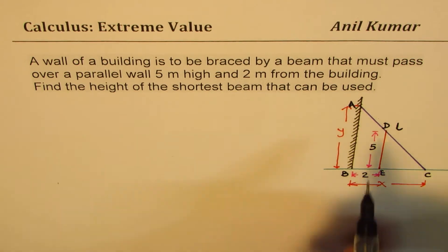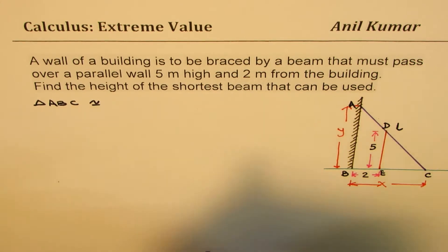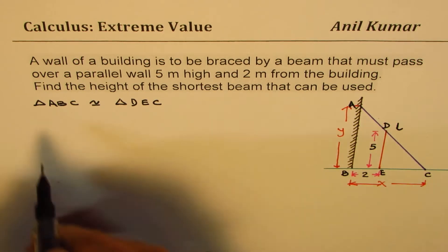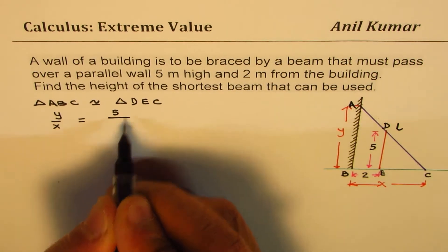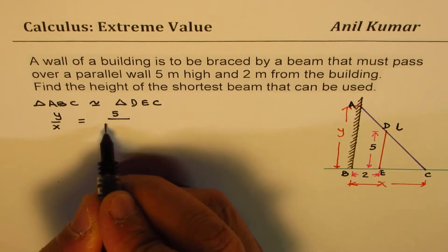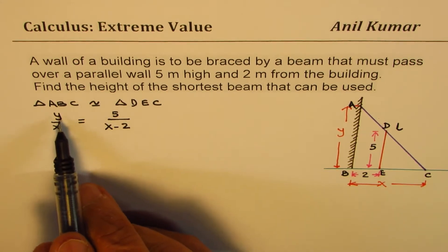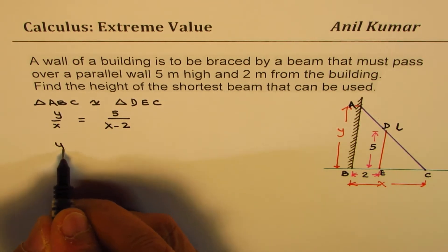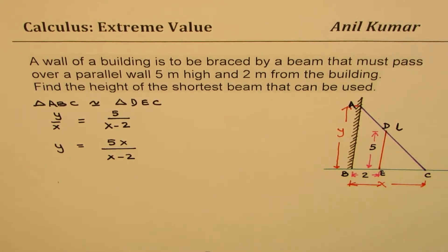Triangle ABC is similar to triangle DEC, so that means Y over X is equal to 5 over (X minus 2). We have a relation between X and Y where we can write Y in terms of X: Y equals 5X over (X minus 2).